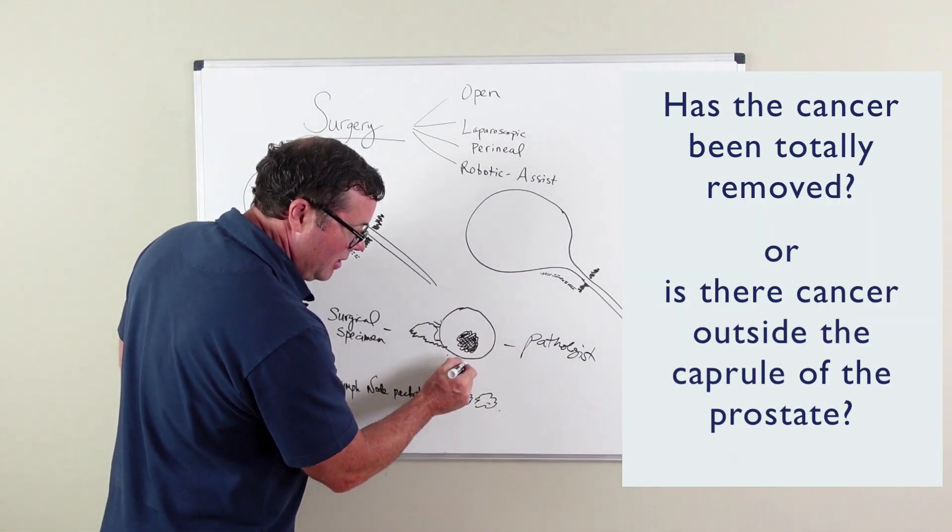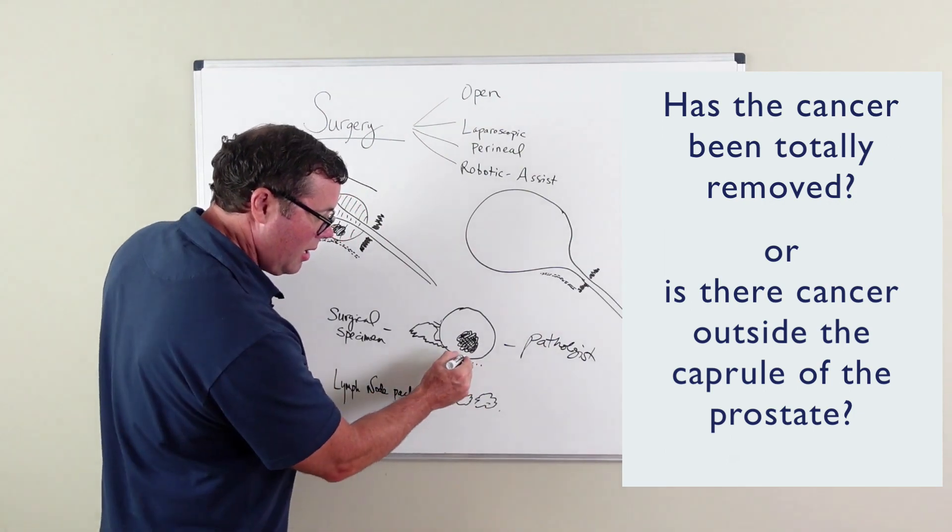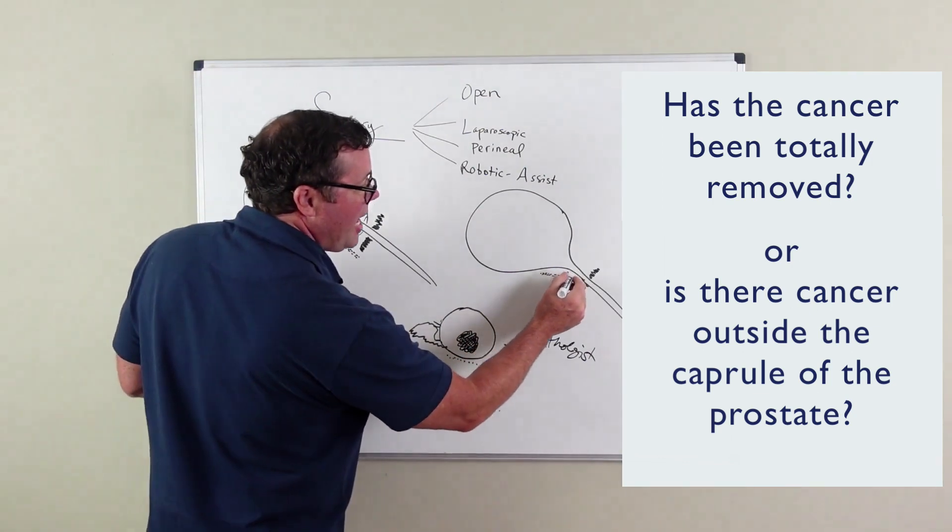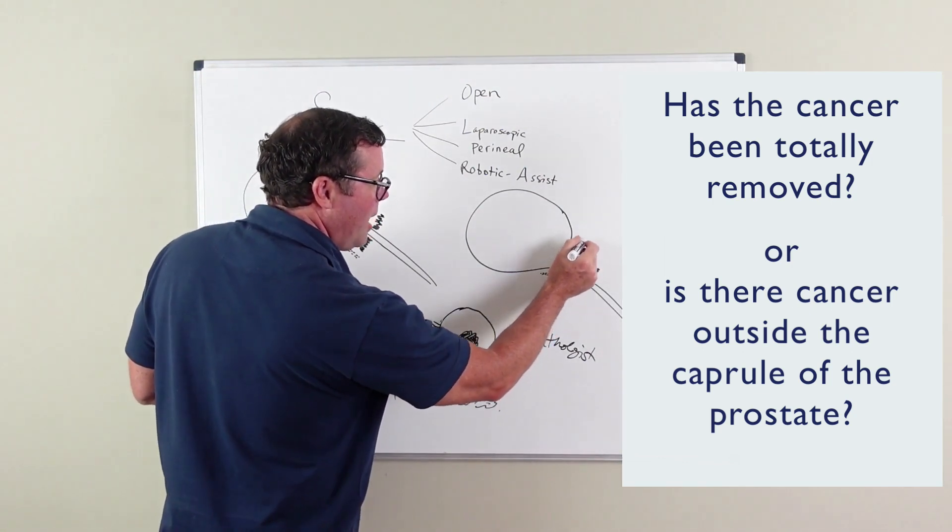Is it outside of this capsule of the prostate? Did it go up against the capsule? Is it possible that there may still be cancer cells left in the body?